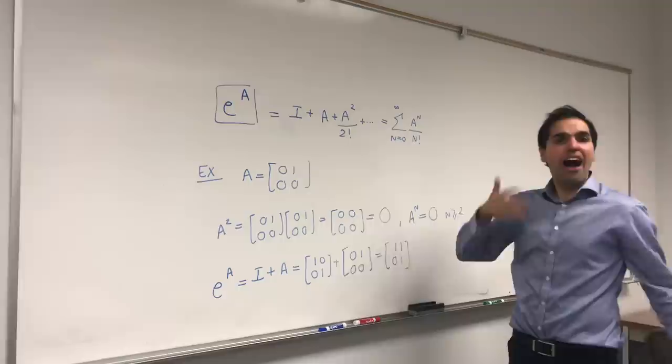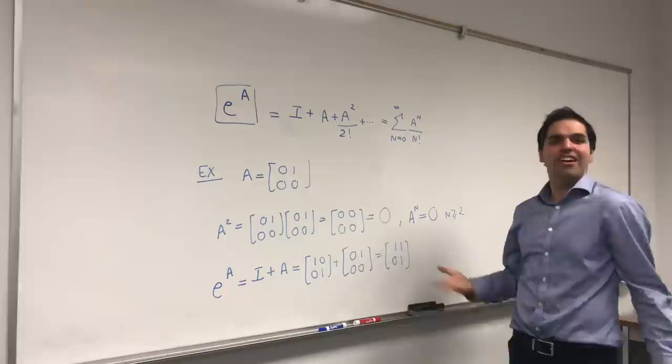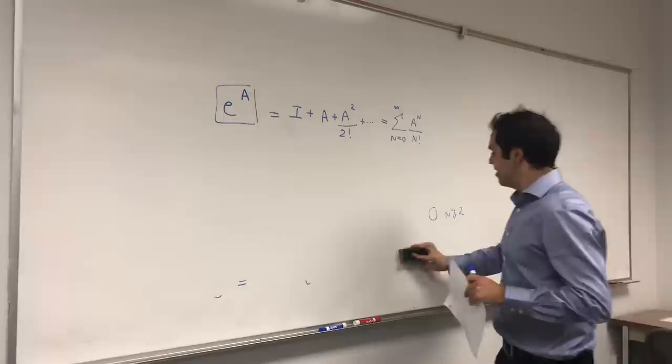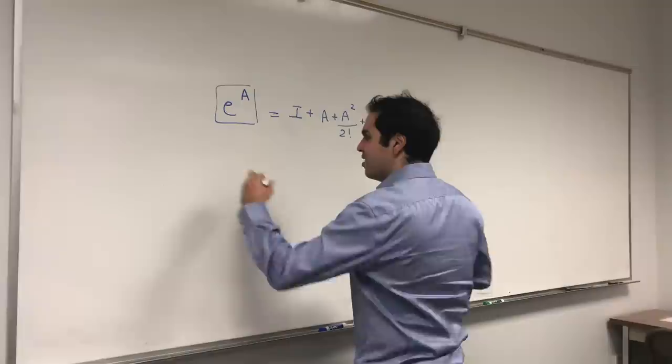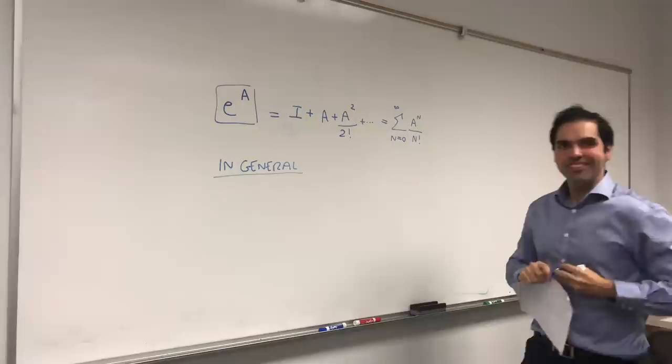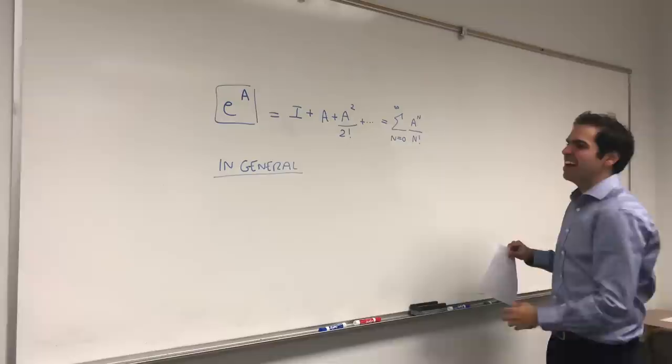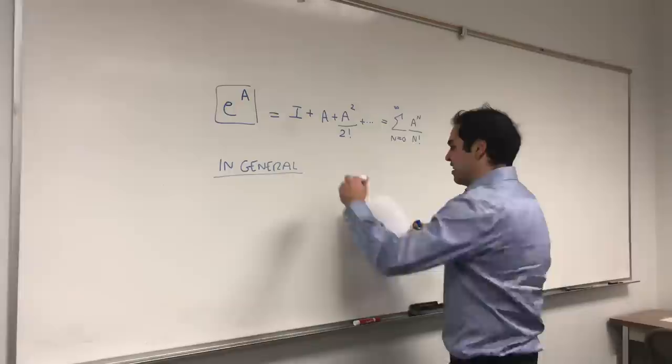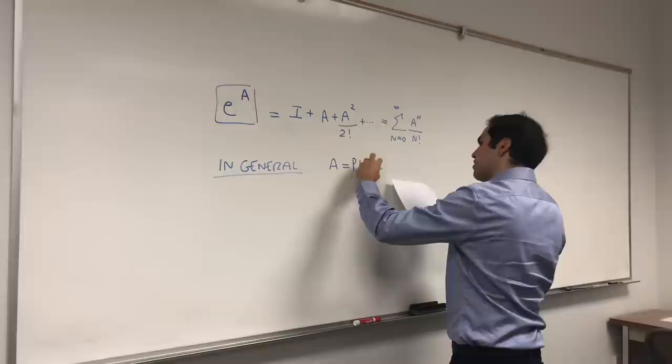Now, the question is, though, how do you do it for matrices that are not like that? So what about, quote, unquote, the general case? But it's not general, general, but still good. So in general, and again, not 100% general because not all matrices are diagonalizable, but in general, suppose A is diagonalizable. Suppose A equals to PDP inverse.